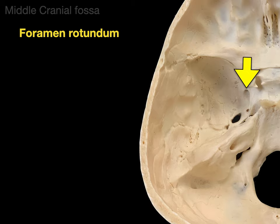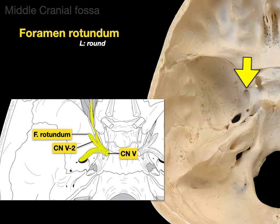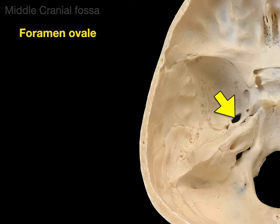The foramen rotundum — foramen for opening, rotundum for round — allows for a branch of the trigeminal nerve, cranial nerve five. Specifically, the V2 maxillary branch goes through the foramen rotundum. So looking here, there's V2 and there's the foramen rotundum. That nerve then goes through the inferior orbital fissure and out the inferior orbital foramen, and it also goes to your maxilla and palate.